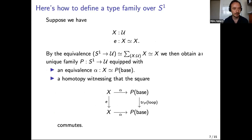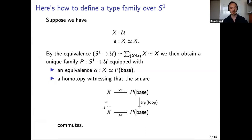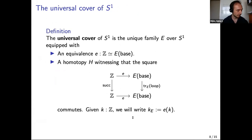Therefore, we can construct a family over S¹ by giving a type and a self-equivalence. Given a type and a self-equivalence, via this equivalence we get the unique family p equipped with an equivalence alpha witnessing that the relevant square commutes — transport along loop in p is exactly applying the equivalence e. Always keep track of computation rules because we'll need them.